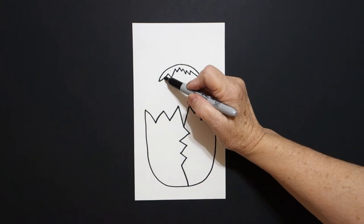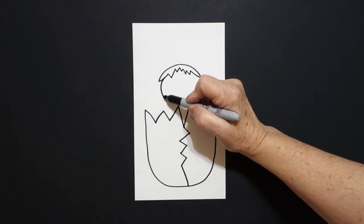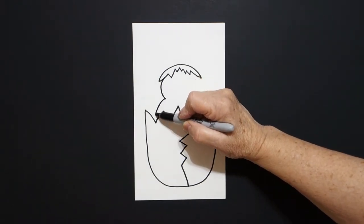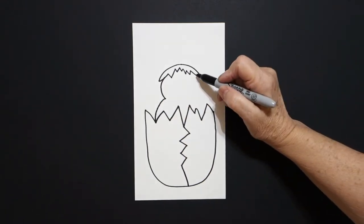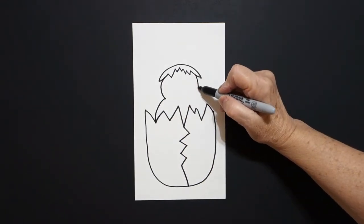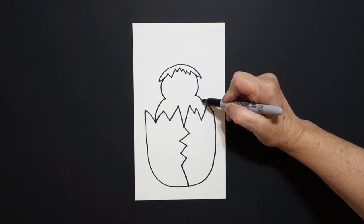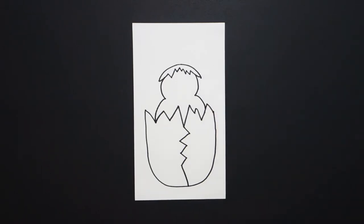Inside on the left, I draw a curve line down, big curve line down, connect on the left. Come on the right hand side, curve line down, big curve line down, connect.